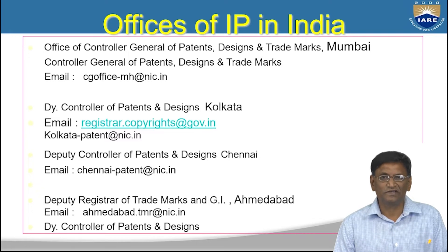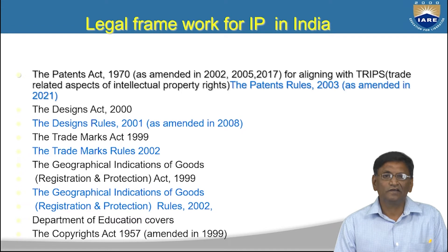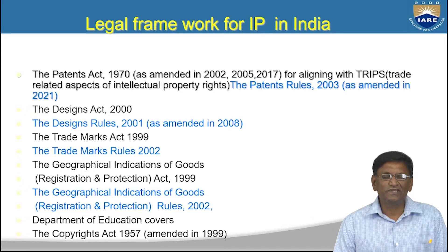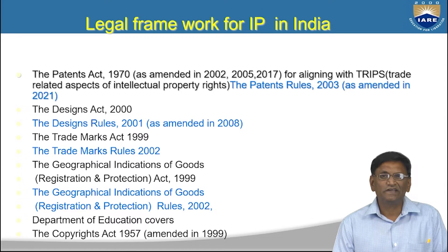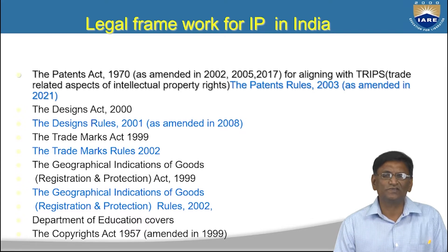For any government agency to administer these rights, it must first be passed in parliament as an act. The original Patent Act in India was finalized and given presidential consent in 1970, with amendments in 2002 and 2017. The 2002 amendment was mainly done to align our patent act with the TRIPS agreement — Trade Related Aspects of Intellectual Property Rights — which India has signed.